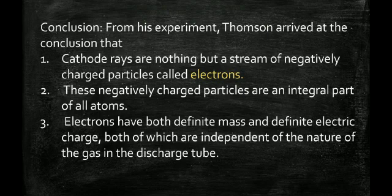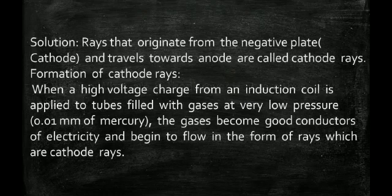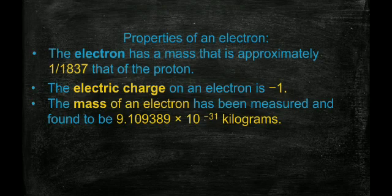Cathode rays move from the negative plate (cathode) towards the anode. The two conditions required for this experiment are low pressure and very high voltage. Properties of an electron: it carries a negative charge and its mass is 9.1 × 10⁻³¹ kg.